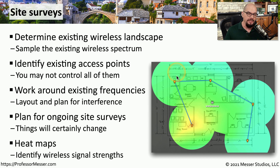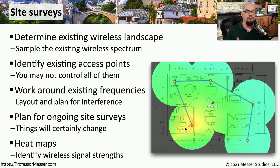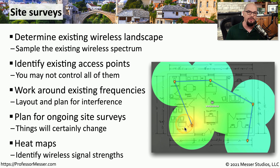Some applications even allow you to move around the organization and create a heat map of where the best wireless access may be. You could then perform the same heat map later on and see if you're getting the same amount of connectivity on the wireless network, or if you may need to make changes to the frequencies in use.